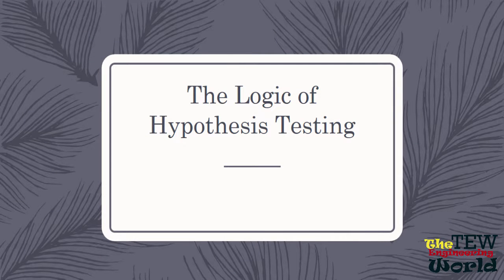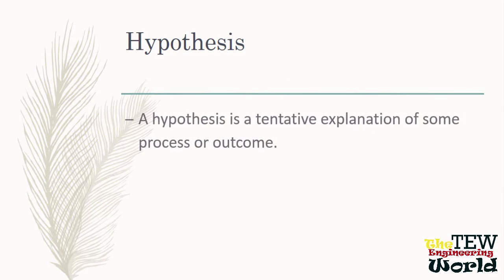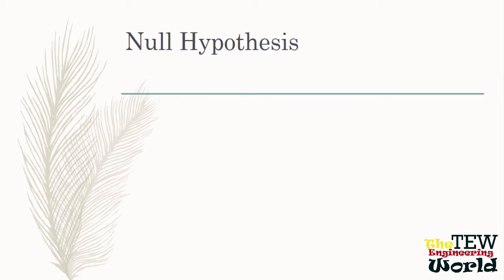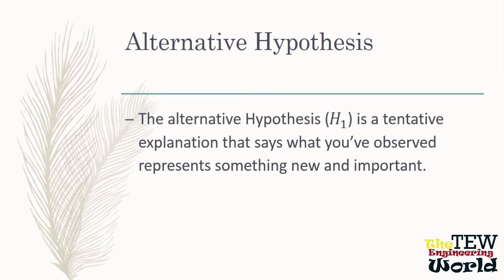Let's get into the logic of hypothesis testing. Hypothesis testing is a way of reasoning about data. We typically have to decide if our data are ordinary or extraordinary. A hypothesis is a tentative explanation of some process or outcome. The null hypothesis says that what you have observed represents nothing new or nothing out of the ordinary. The alternative hypothesis says what you have observed represents something new and something that is important.